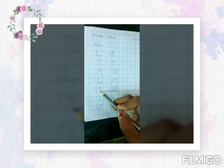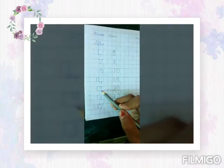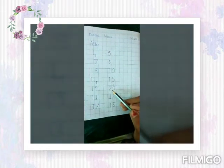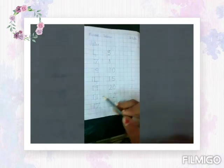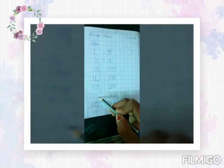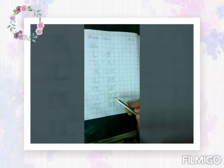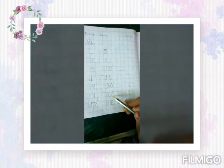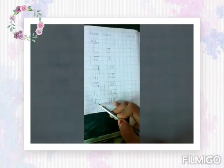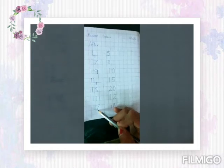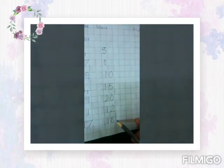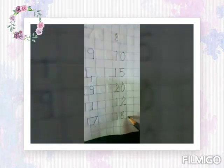What number is this children? Number 19. What number will come after 19? 20. Now what number is this children? 11. Now what number will come after 11? 12. Now what number is this children? 17. Now what number will come after 17? 18.